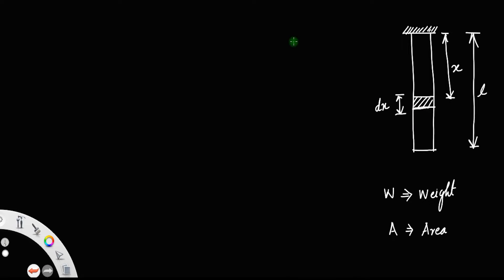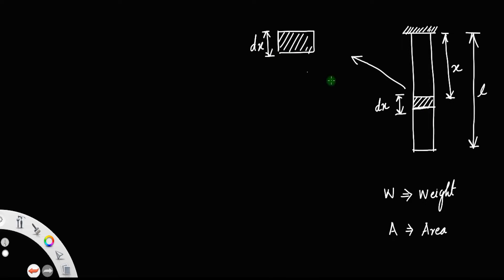If you draw the free body diagram of this section, this section has a thickness dx. There will be a force acting on this section due to the weight of the rod below the section. So it experiences a downward force.